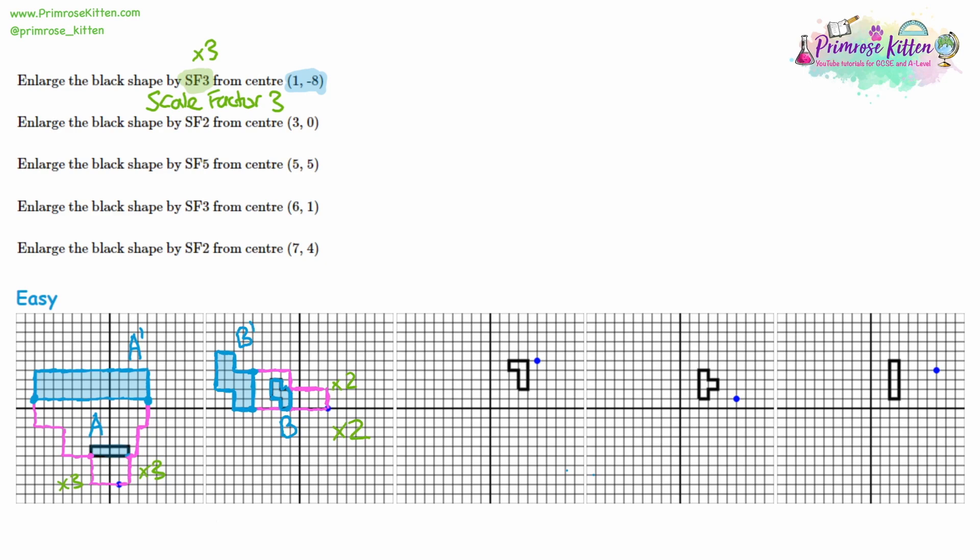Now you could have shape B dash anywhere on the page and get a mark for it because you've enlarged it correctly. But to get full marks — typically two or three marks — it would have to be in the correct position exactly where I've drawn it.